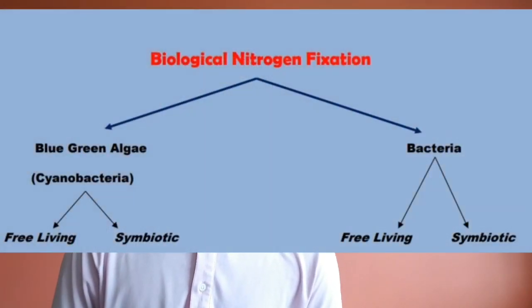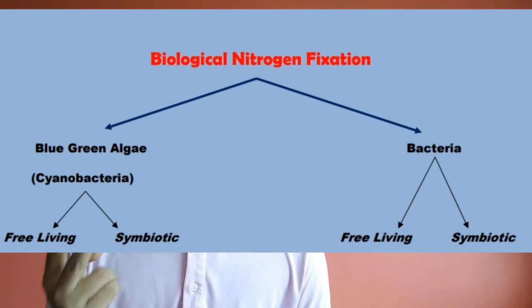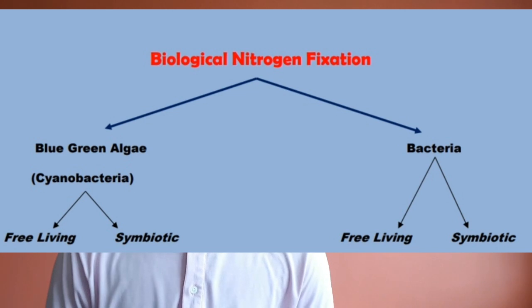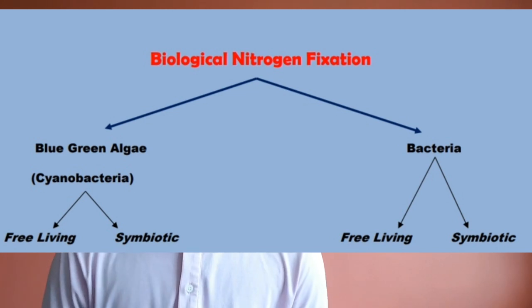Now moving on to the biological process — where microorganisms, specifically prokaryotes, fix atmospheric nitrogen. Biological nitrogen fixation is divided into two groups: cyanobacteria (the blue-green algae) and bacteria. Both of these are further divided into free-living and symbiotic forms.